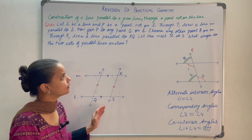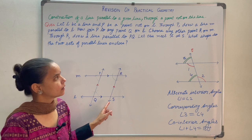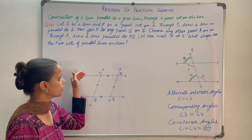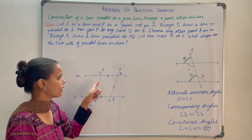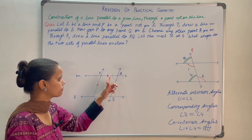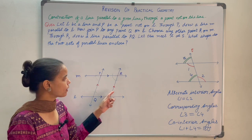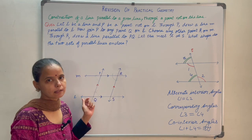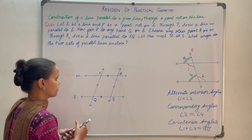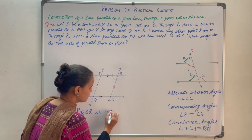So now you get a line through R parallel to PQ, because corresponding angles are equal. These two sets of lines are parallel. Let this line meet L at S. So one set: PR is parallel to QS; another set: PQ is parallel to RS. This is a quadrilateral having two pairs of opposite sides parallel, so the shape is a parallelogram. PQSR is a parallelogram.